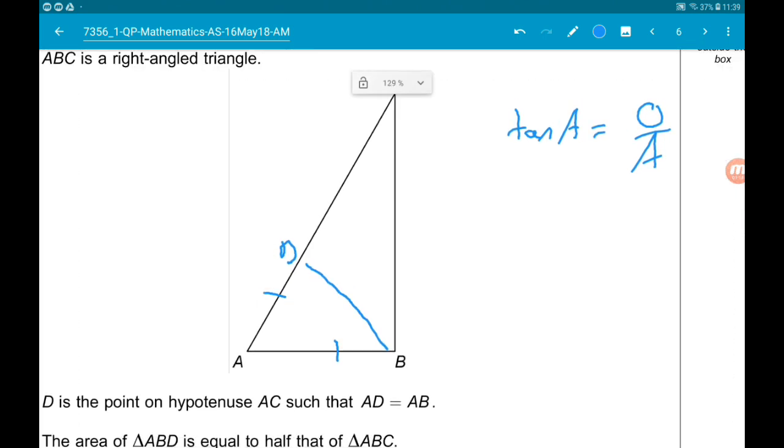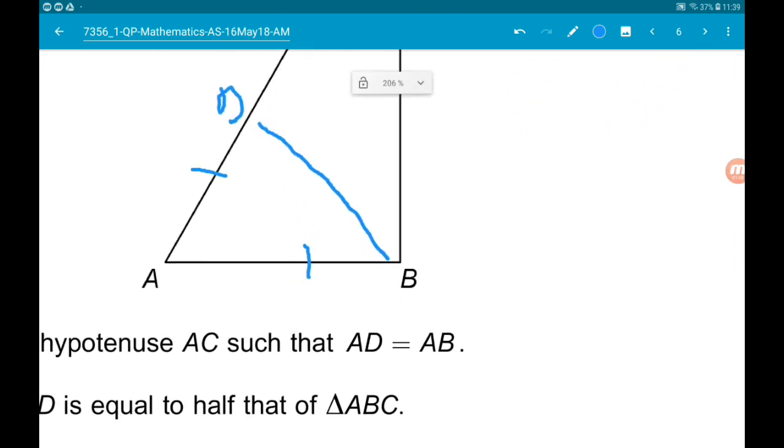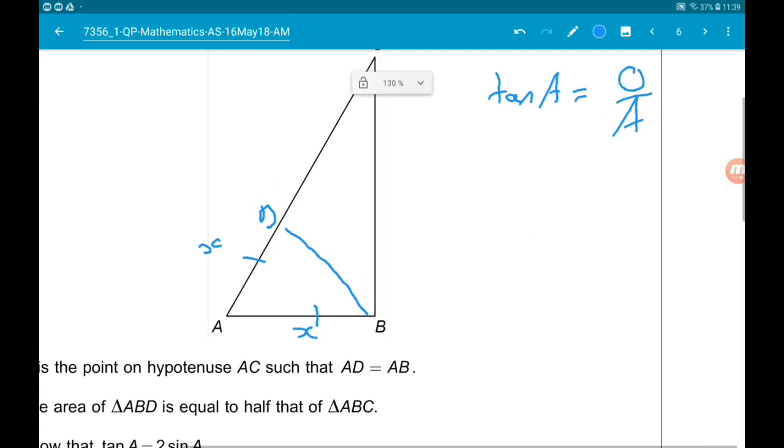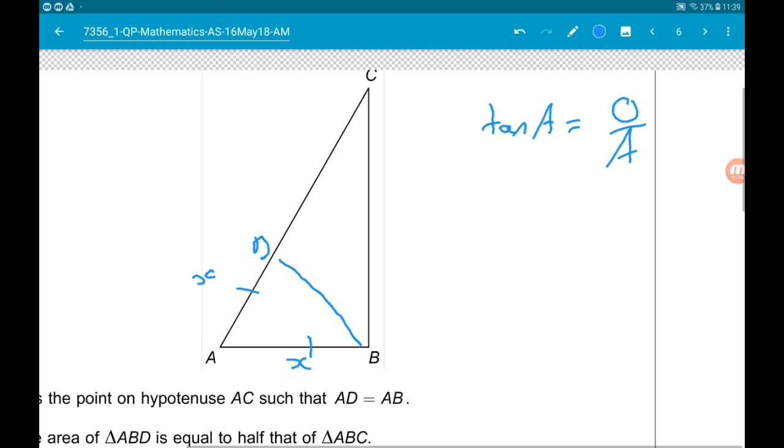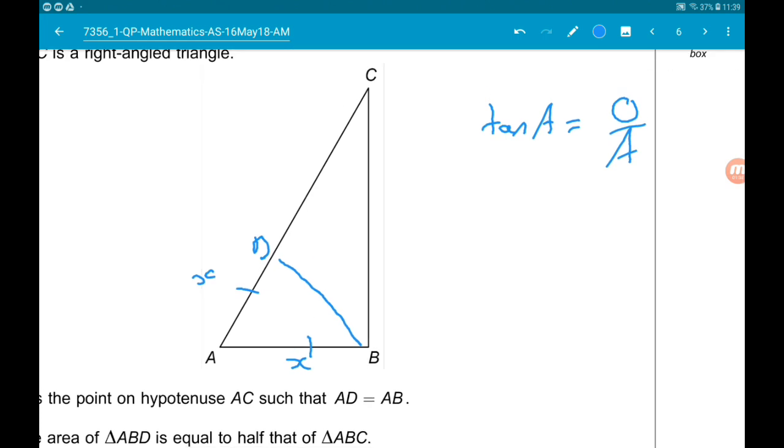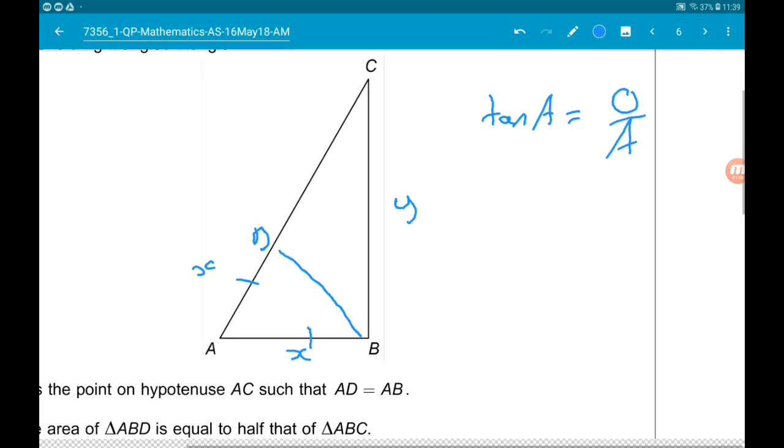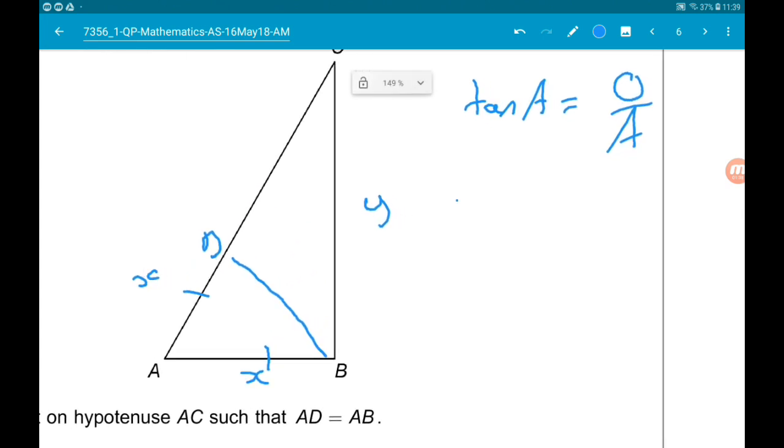Now, to make things a little bit nicer, I'm going to call this base length X so that we also know AD is X. And I'm going to call the height BC, I'm going to call it Y. So we know that tan A is equal to Y over X.